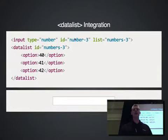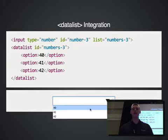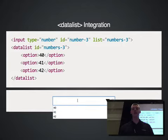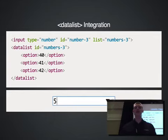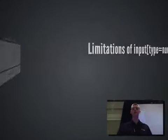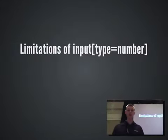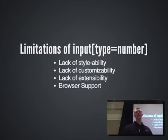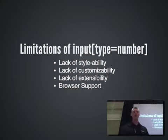You get data list integration as well. Chrome implements this like a typical autocomplete where you see options in a little drop-down box, but since it's a data list, you can type whatever value you want into it. The limitations of input type number are the same basic things — if you want to build things on top of it, you're going to have a lot of issues.